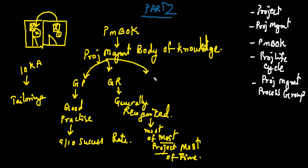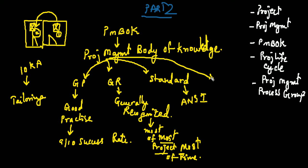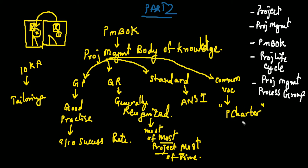Another component is called a 'standard.' The PMBOK is derived from a standard called ANSI — the American National Standards Institute. There's also something called a 'common vocabulary.' Common vocabulary means that when I say 'project charter,' everybody knows what it means — everybody speaks the same language. There's also one more component called the 'code of ethics.'